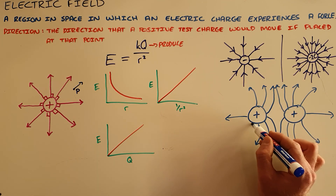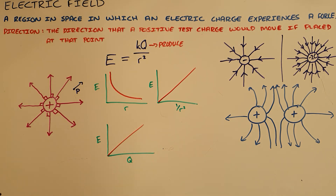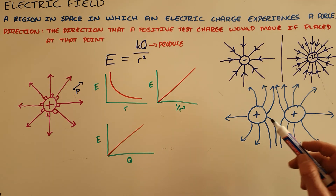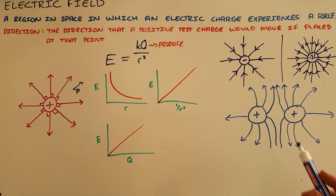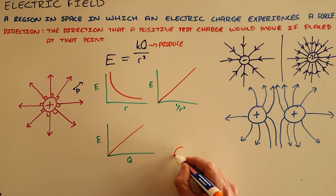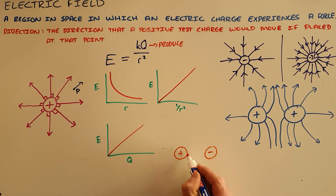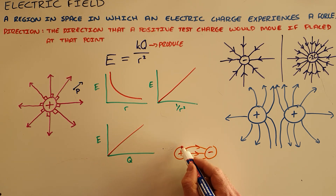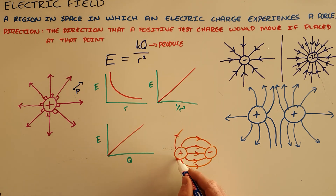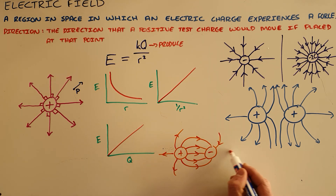These field lines should not cross or touch each other. The electric field drawn between two negative charges would look exactly the same, only with the arrows pointing in opposite directions. Finally, to draw the electric field pattern between two oppositely charged objects, we show the direction in which a positive charge would move if placed at that point. The electric field lines are directed from the positive charge towards the negative charge.